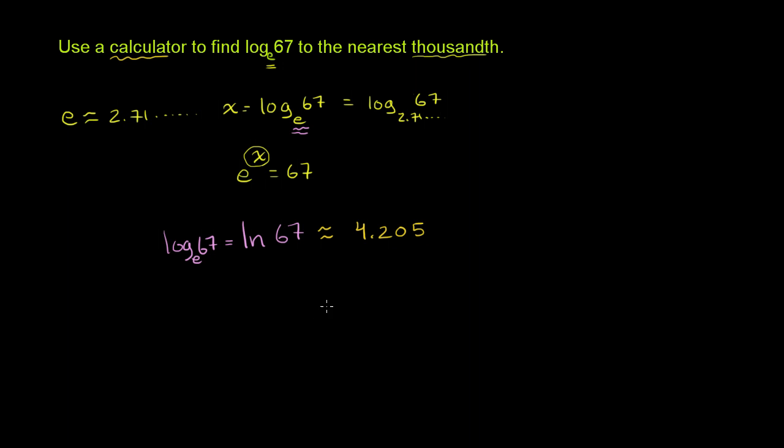And it actually makes a lot of sense, because we know that e is greater than 2 and less than 3. If you think about it, 2 to the fourth power gets you to 16, and 3 to the fourth power gets you to 81. 67 is between 16 and 81, and e is between 2 and 3.